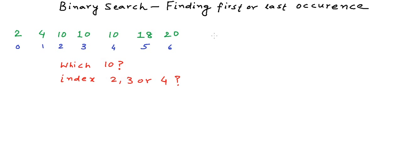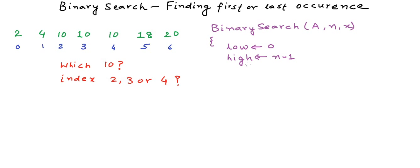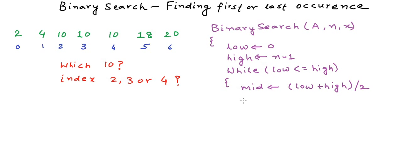Let us write the basic implementation we had written previously. We write a method binary search that takes three arguments: array a, its size n, and the element to be searched for x. We initialize two variables low and high to 0 and n-1 to mark the segment of the array in which x is probable to lie. While low is less than or equal to high, we calculate mid as low plus high divided by 2. If x is equal to the middle element, we have found x and return the index mid.